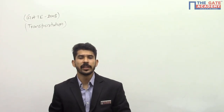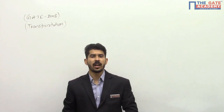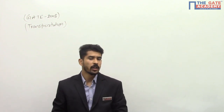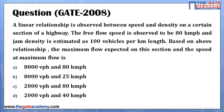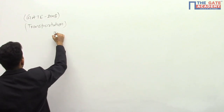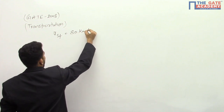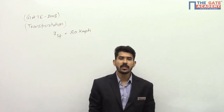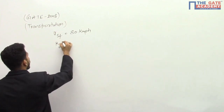A question asked in GATE 2008 in transportation engineering can be solved in less than a minute by simply looking at the options. The question states that a linear relationship is observed between speed and density on a certain section of a highway. The free flow speed is observed to be 80 kmph (u_sf = 80 kmph) and the jam density is 100 vehicles per kilometer (k_j = 100 veh/km).